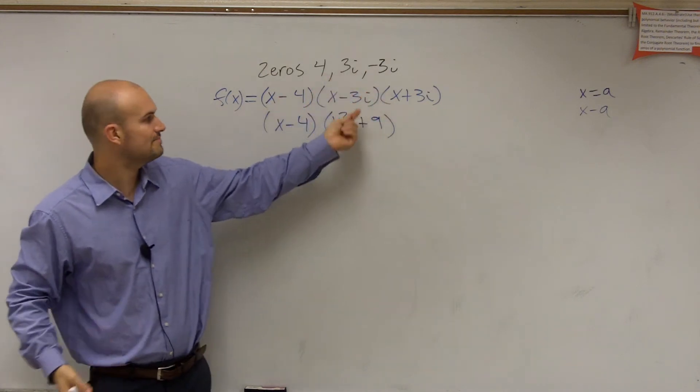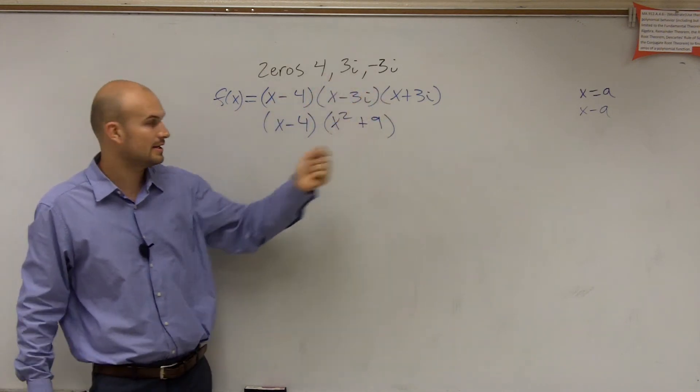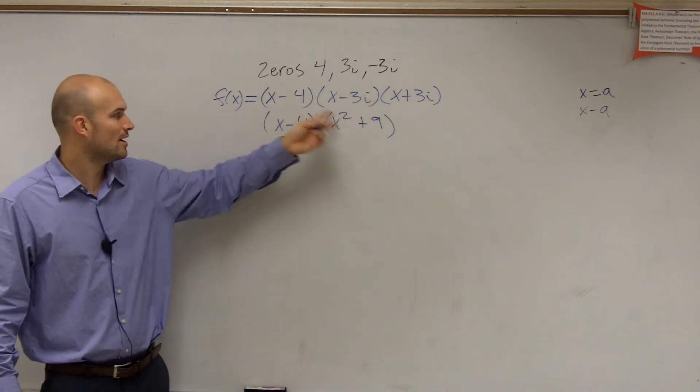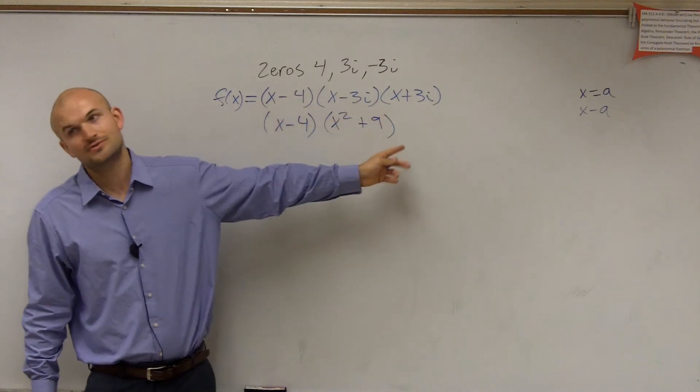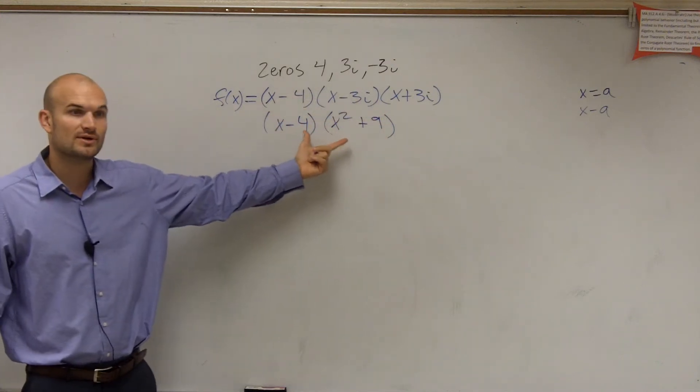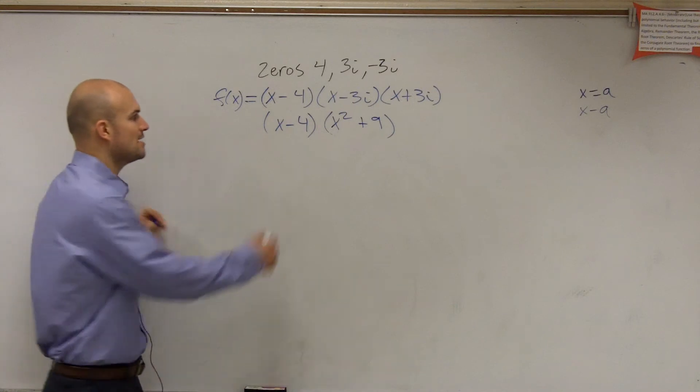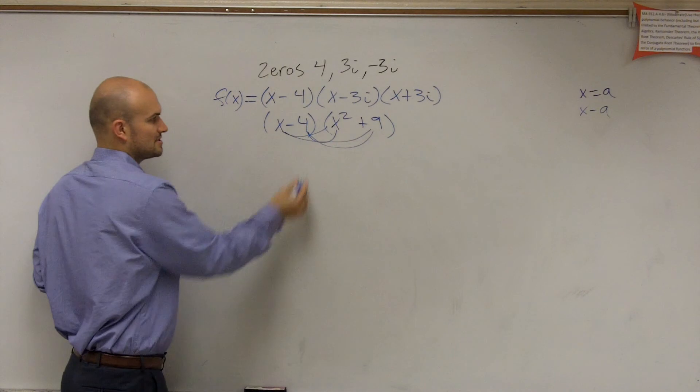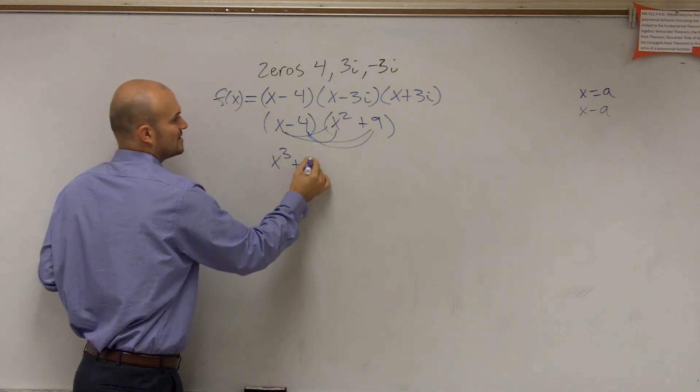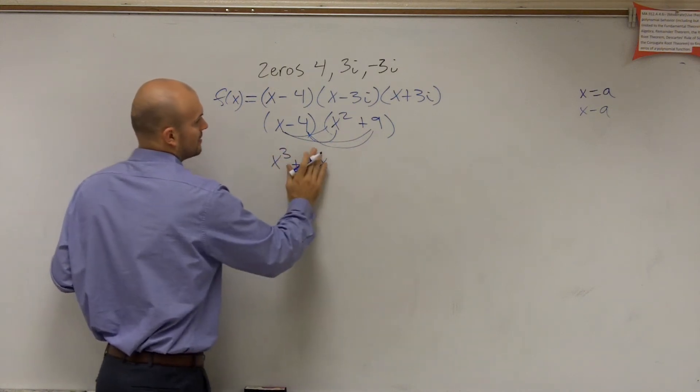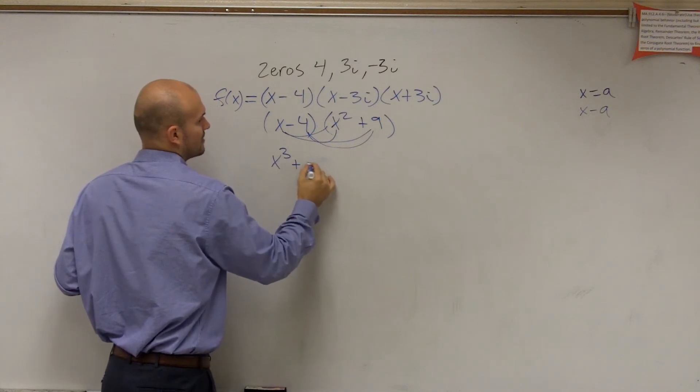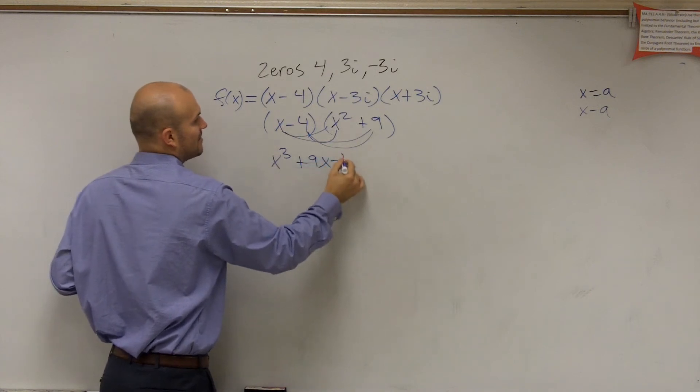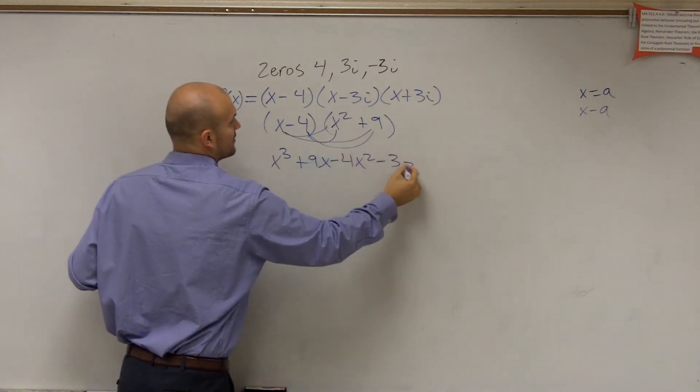Remember, you can still do FOIL, but the middle terms cancel out. Because what I notice is a lot of students now, they take all their binomials and they say, oh, you can just multiply the first and last two numbers. No, that's only for difference of two squares. For this one, we're going to have to use FOIL. We're going to have to make sure I multiply my first term times both terms and this one by both terms. So when I do that, I get x cubed plus 9x minus 4x squared minus 36.